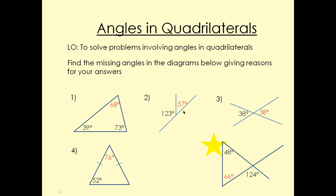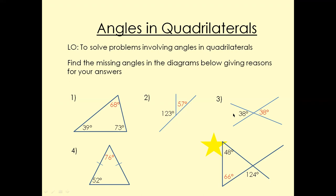This one here — angles on a straight line add up to 180 degrees. Find this angle: it's 180 take away 123, and that will give us 57 degrees.